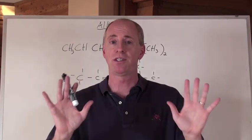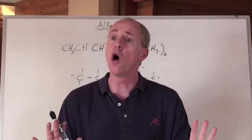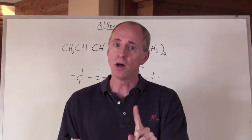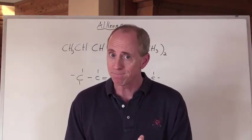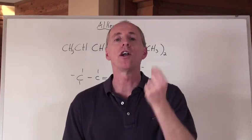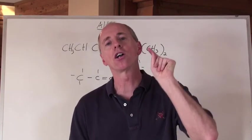So the deal is, when you see a multiple bond, you always include it in the longest chain, and you start your numbering from where they are closest to.